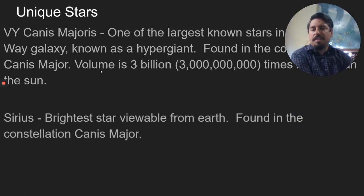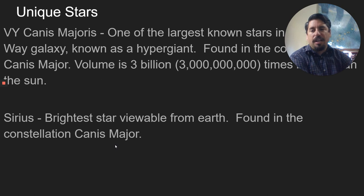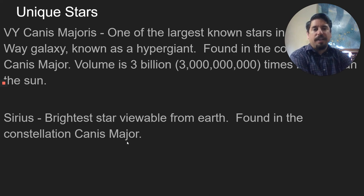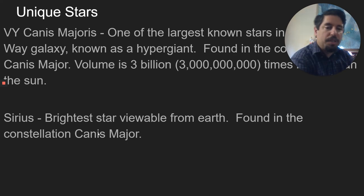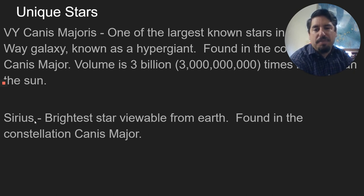Sirius is the brightest star that we can see. It's found in the constellation Canis Major. You can see it at night if it's clear — it's very, very bright, and it looks almost like a planet. Planets are actually brighter than stars because they're much closer. We can see some planets this time of year. Sirius is also visible and it's very bright.